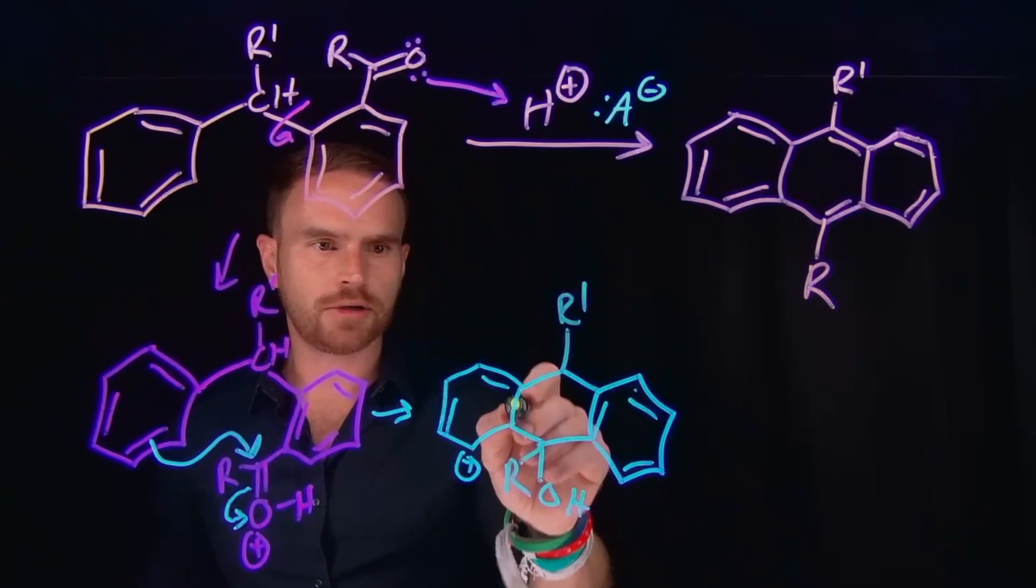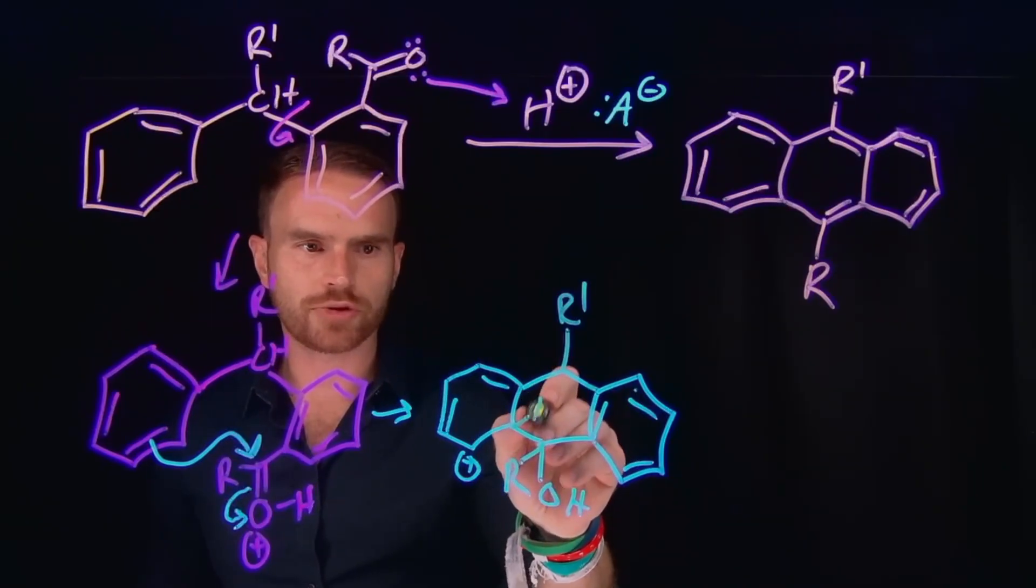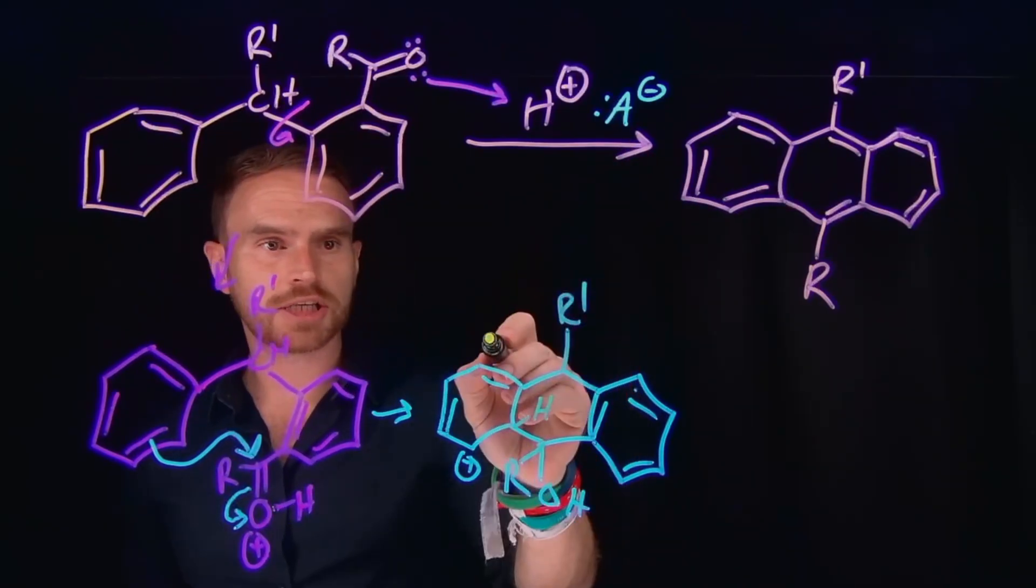And importantly, there is still just three bonds to this carbon, which means that there is a hydrogen here, as well. So then this conjugate base can come down.